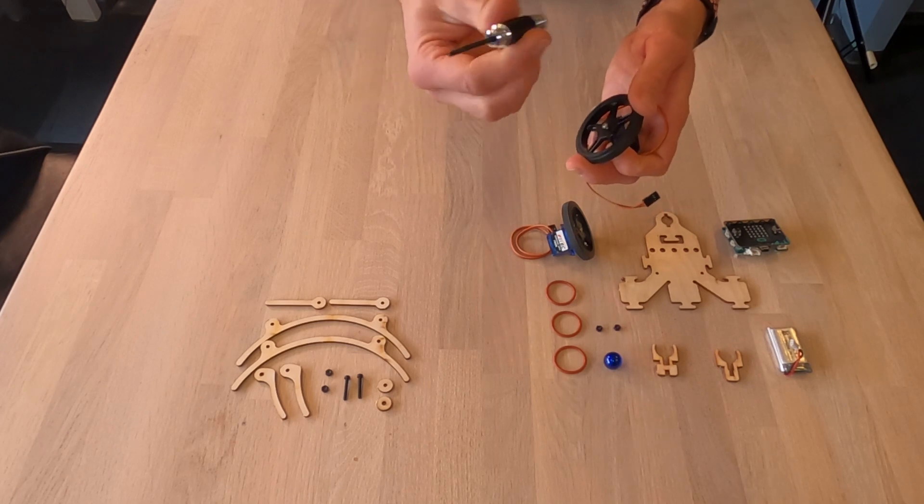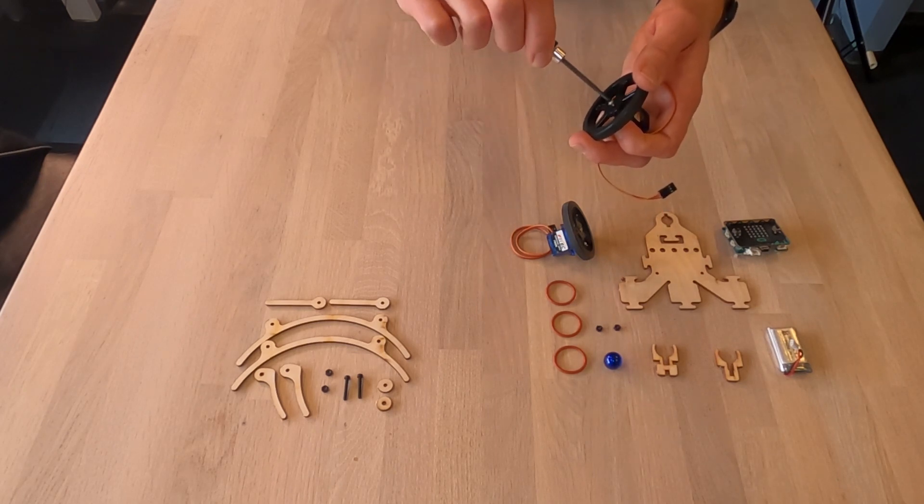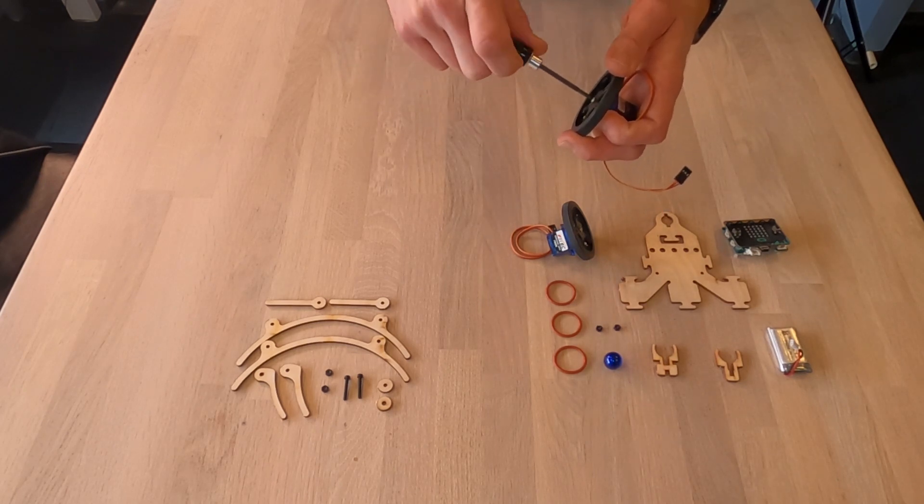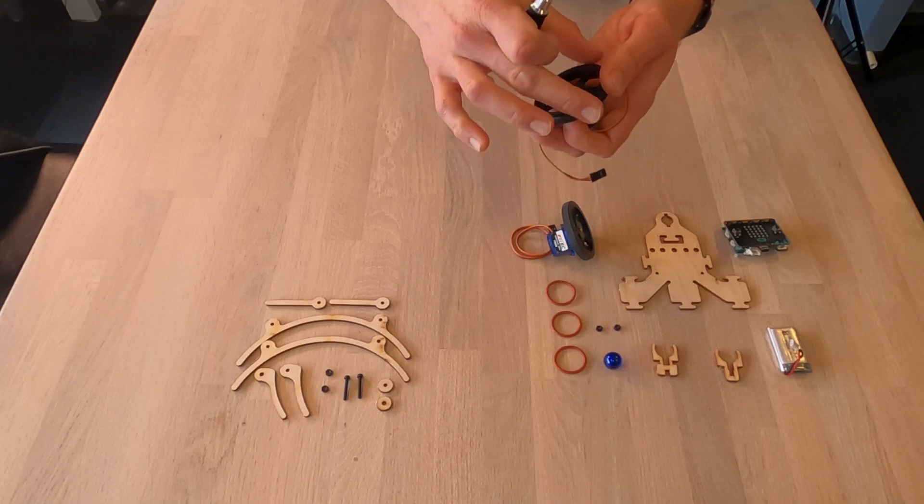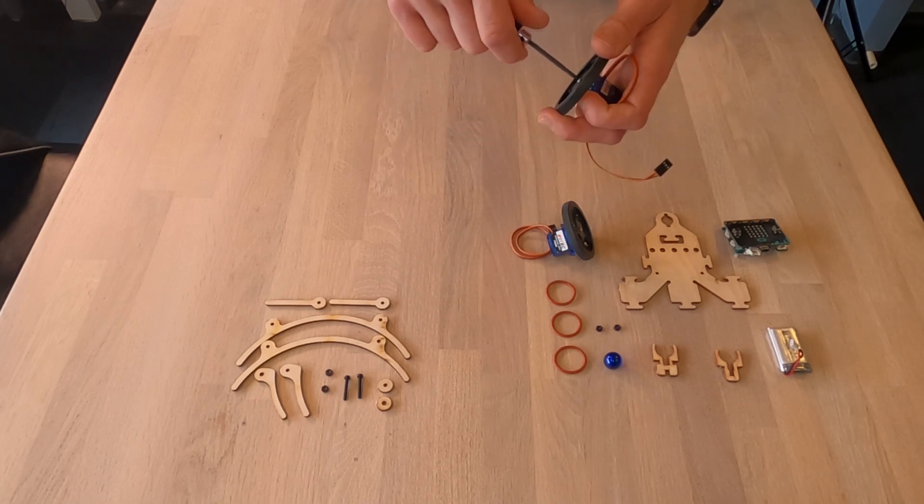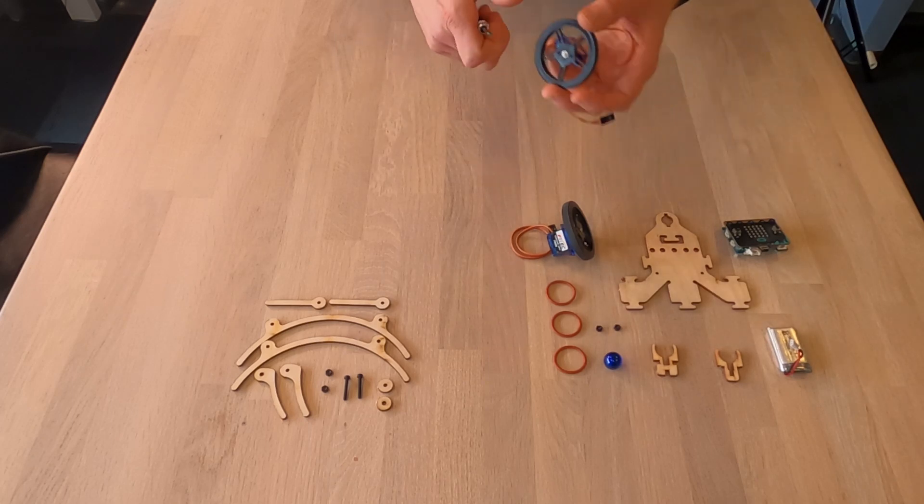So what you want to have is one of these, a small screwdriver. Now turn it, I hold the wheel, making sure that it doesn't go around, and just tighten slightly.